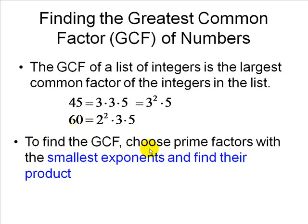To find the greatest common factor, choose those prime numbers with the smallest exponents and find their product. What's common here is 3 and the smallest exponent is 1. What's common here also is 5 and the smallest exponent is also 1. Therefore, 3 and 5 are common factors associated with 45 and 60, and 3 times 5 is 15. Therefore, 15 is the greatest common factor between 45 and 60.